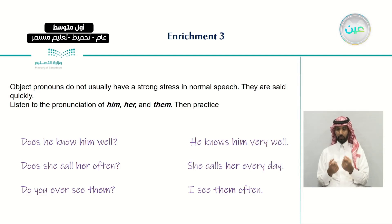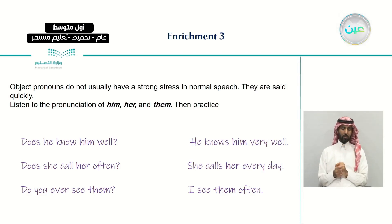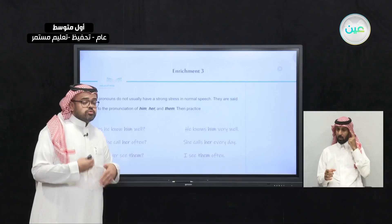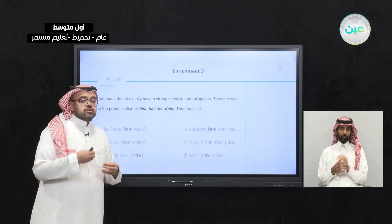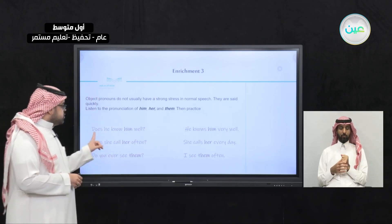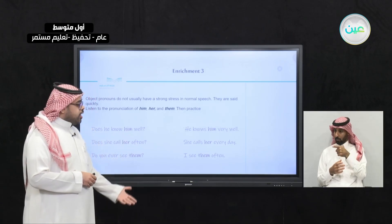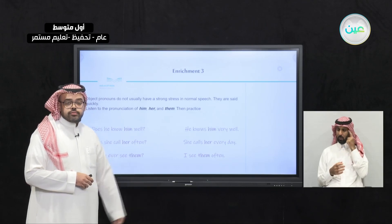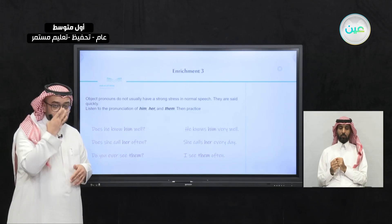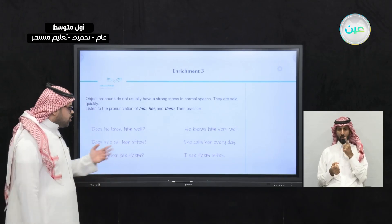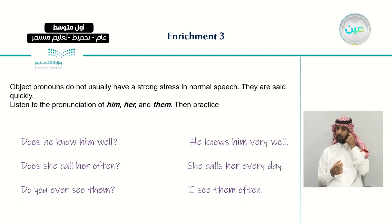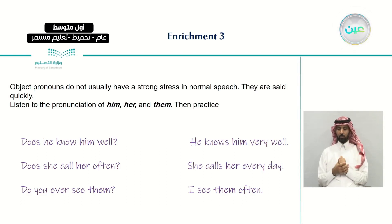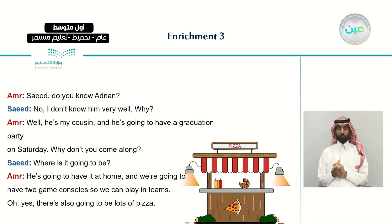After this we learned that object pronouns do not usually have strong stress in normal speech — they are said quickly. For example, 'Does he know him well? He knows him very well.' You don't stress them very hard. Another example: 'Does she call her often? She calls her every day.' This is how we can merge object pronouns when speaking.